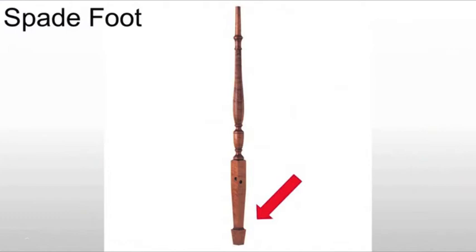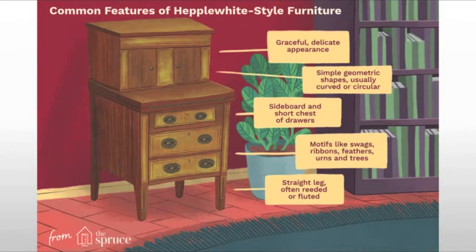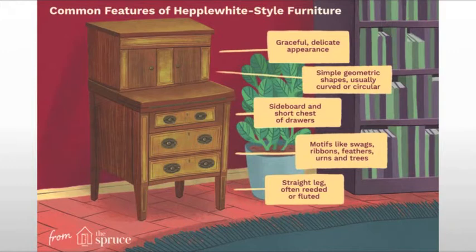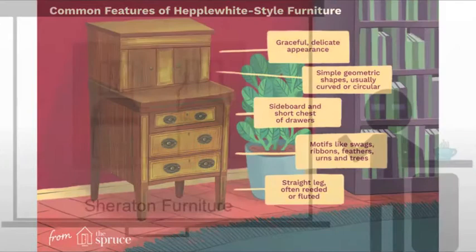The spade foot is very similar to what we saw from the French neoclassical, but instead of being turned, it's actually hand carved or cut. Common features of Hepplewhite style furniture include a graceful, delicate appearance and very simple geometry — if you see something that's curved, it's going to be a subtle curve or a mechanical curve, part of a circle. We're going to see short chests of drawers, pieces that are a little bit understated, with straight legs often fluted or reeded. Fluted means cut in; reeded means those vertical pieces come out towards the viewer. We're also going to see motifs like swags, ribbons, feathers, urns, and trees, but they'll usually be on the fixtures or in the marquetry work.